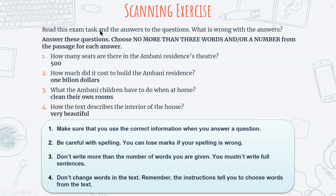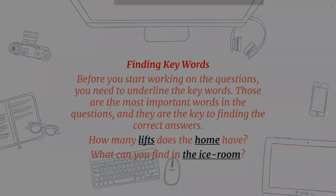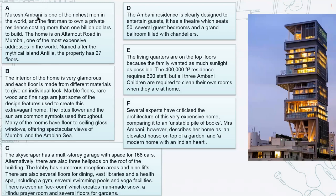Let's look at this exam task. The question says: 'Answer these questions. Choose no more than three words and/or a number from the passage for each answer.' For example: 'How many seats are there in the Ambani residence theater?' The keywords to underline are 'seats' and 'theater.' Now let's go back to the text and follow these steps.